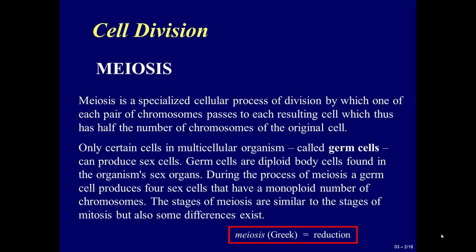Meiosis is a specialized cellular process of division by which one of each pair of chromosomes passes to each resulting cell, which thus has half the number of chromosomes of the original cell. Only certain cells in a multicellular organism, called germ cells, can produce sex cells. Germ cells are diploid body cells found in the organism's sex organs.